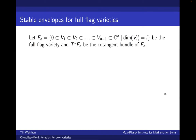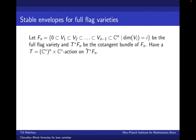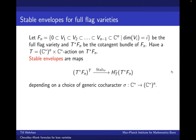I want to talk about stable envelopes for cotangent bundles of full flag varieties. Let F_n be the full flag variety parameterizing full flags in C^n, and T*F_n be the cotangent bundle of F_n. By construction, this variety comes with an action of a rank n+1 torus: the first factor is inherited from the torus action on C^n, and since the cotangent bundle is a vector bundle, there is also a torus action given by scaling the fibers. Stable envelopes are maps from the T-fixed locus to the equivariant cohomology ring of the cotangent bundle of the full flag variety, depending on a choice of a generic cocharacter of the rank n torus.